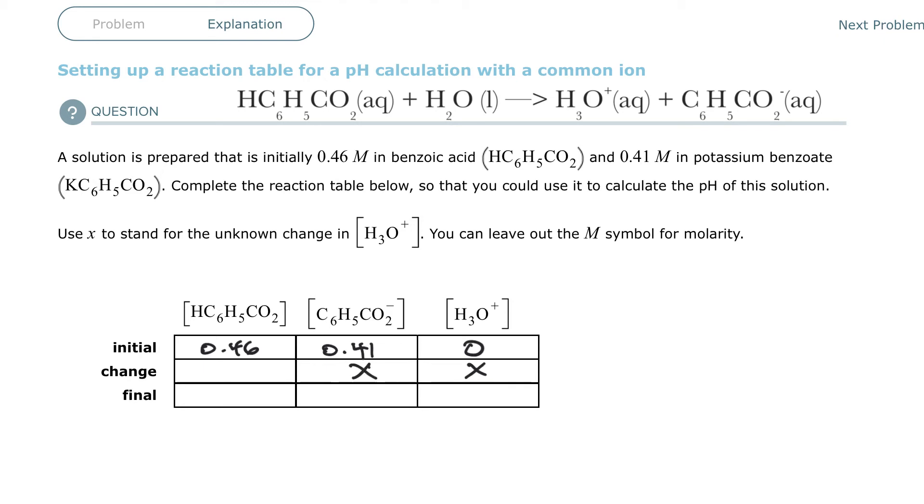Well, this is one-to-one here with the benzoic acid, but it's on the other side of the arrow, so this can't be x, it has to be minus x. So this will be minus x.